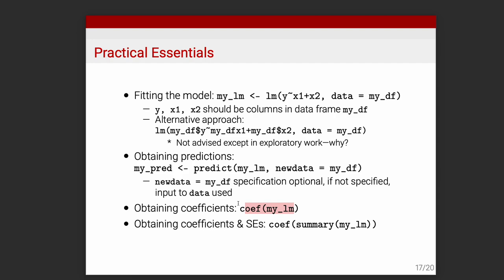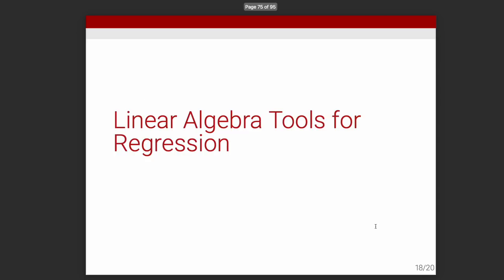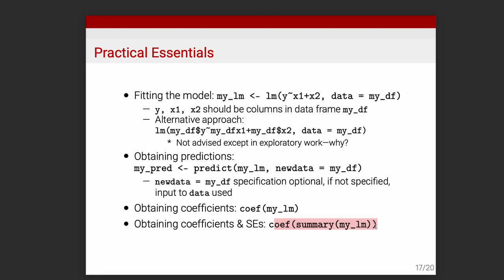You can also perform hypothesis tests by calling coef(summary(my_lm)). This gives you not only the point estimate but also uncertainty estimates. Statistical inference — one of the main themes coming up — is the beautiful idea that not only can you estimate something, but you can also estimate your uncertainty around that estimate. That's called statistical inference and will be an important part of this course.